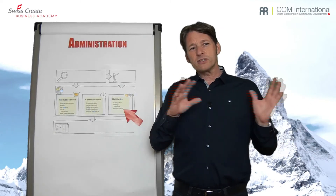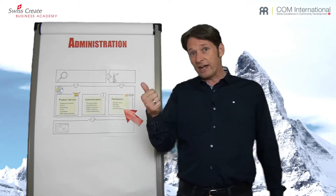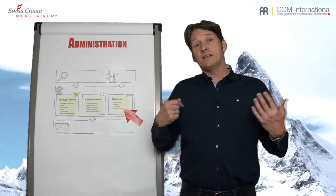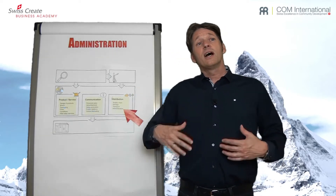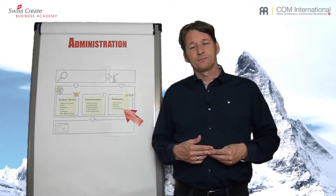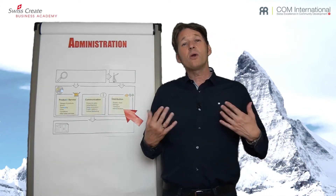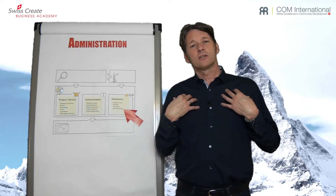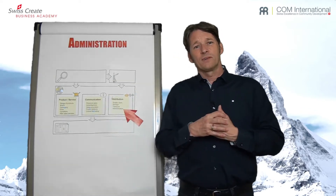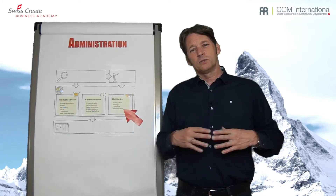We have here two levels. The first level is how can the customer find us, the second is how can they reach us and our company, our restaurant, and the third is how can they enter the office, the shop, the restaurant. On the other hand we have another level: how can we reach customers, especially if they do not enter our shop and we have to deliver to them. This is the second dimension of customer access.